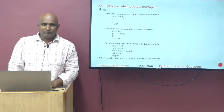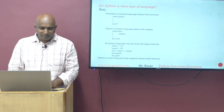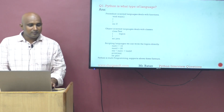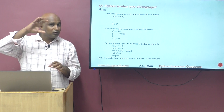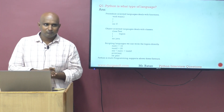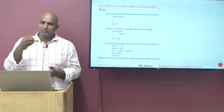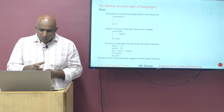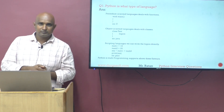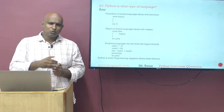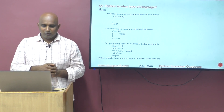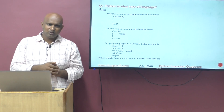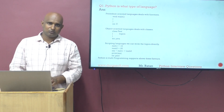So Python is what type of language? Python is a multi-programming paradigm language. In Python, we can write the code using only scripts — without any functions, without any classes, directly script-based. Python supports about three flavors: we can write code script-based, we can write code class-based, and we can write code function-based as well.